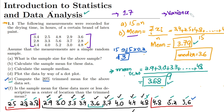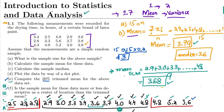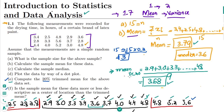I have previously told you that we have the first moment, and that is the mean. If the mean is not giving us the required information, then we have to move to the second moment, and that is variance or standard deviation. So today we have to find out the variance of our data set.